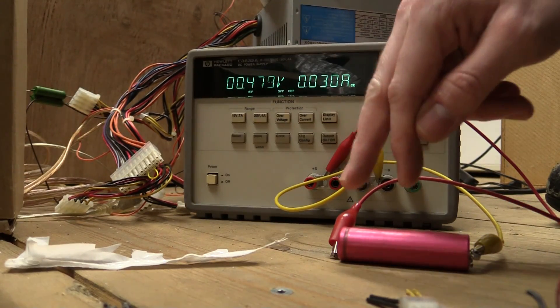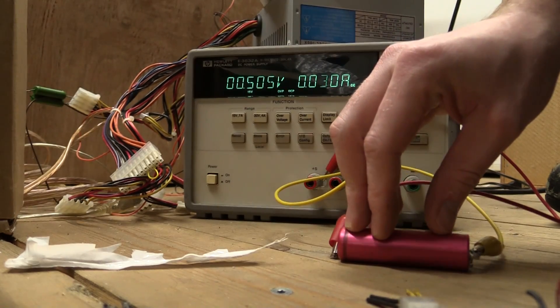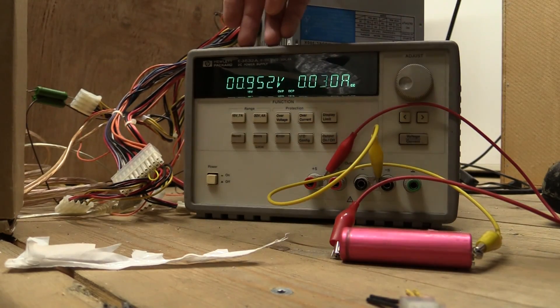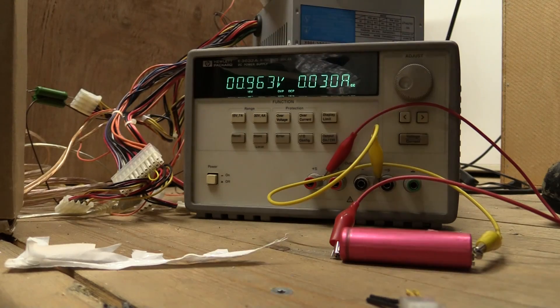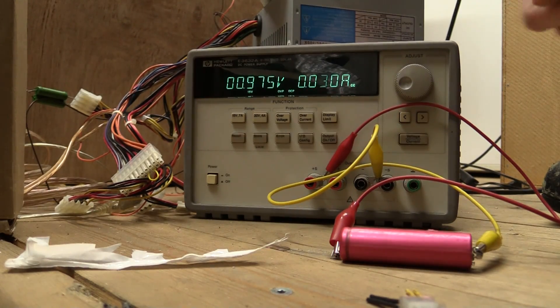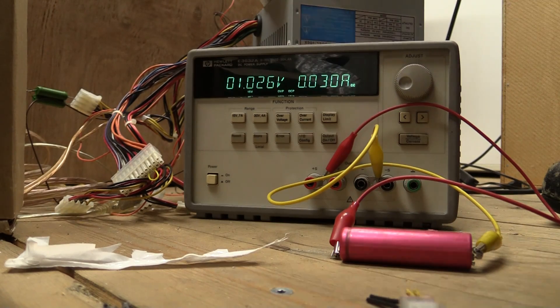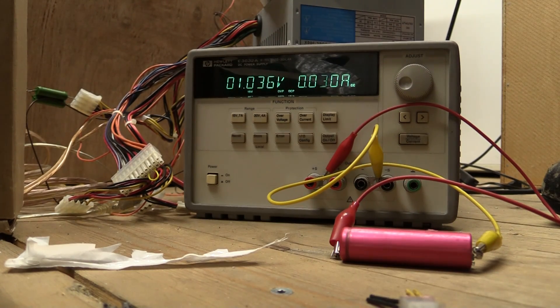So we'll see what happens. I don't really know what to expect. So I'll let it charge up to about 3 volts, and then we'll bump up the current a little bit to about 100 milliamps. And then when we get a little bit higher, we can probably give it more current.